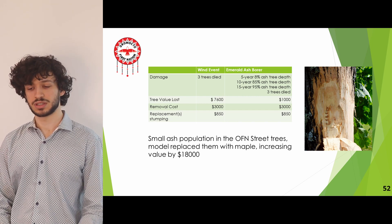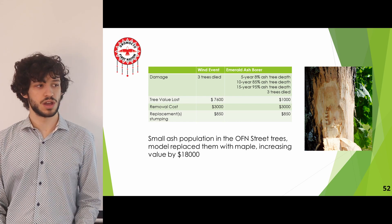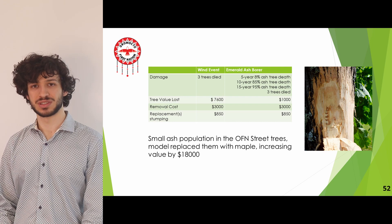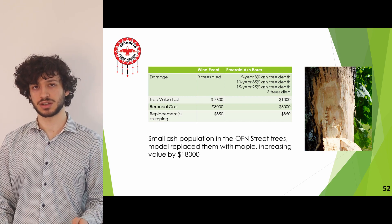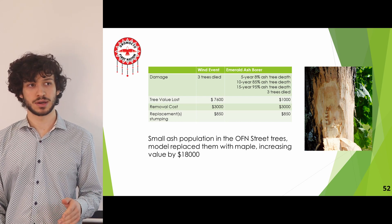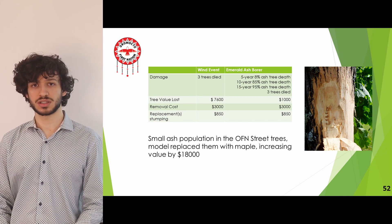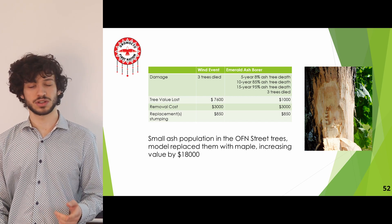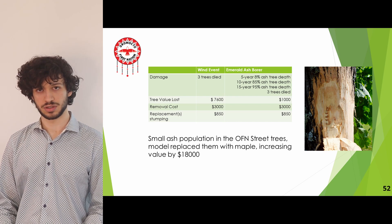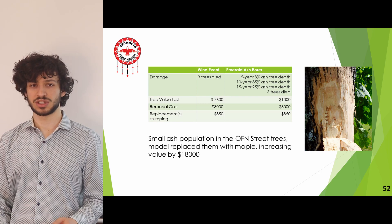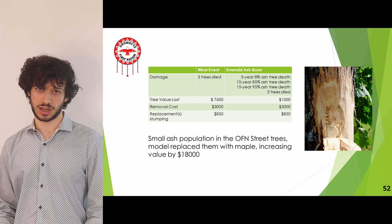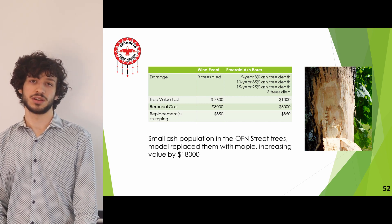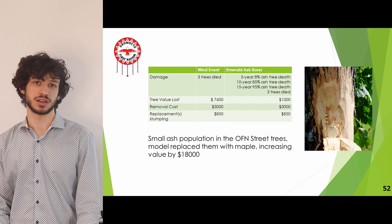Two sensitivity analyses were conducted for OFN street trees, similar to DND. The post-tropical storm sensitivity replicated 13% tree mortality, resulting in three trees dying, a structural value loss of $7,600, and cleanup costs of around $3,800. The EAB sensitivity found that only one tree survived out of four ash street trees, resulting in $1,000 lost in structural value and $3,800 in cleanup. As a note, the model replaced ash trees with maples, resulting in an increase of $18,000 in final structural value.